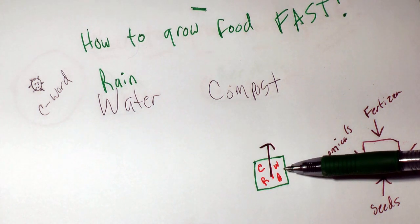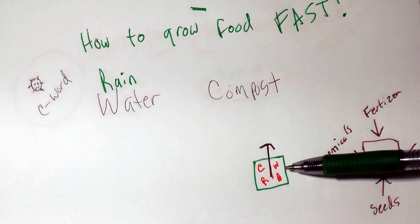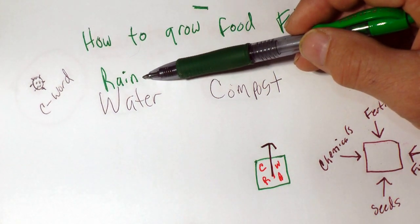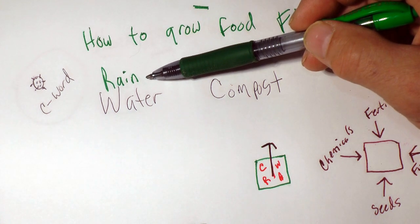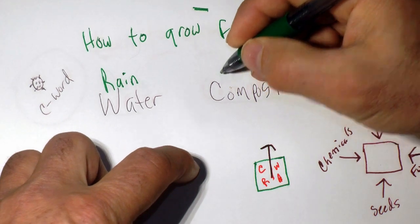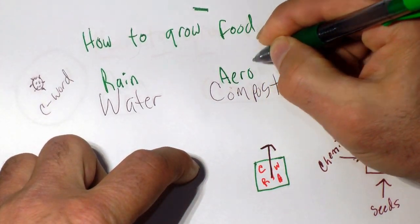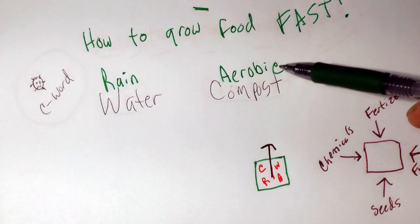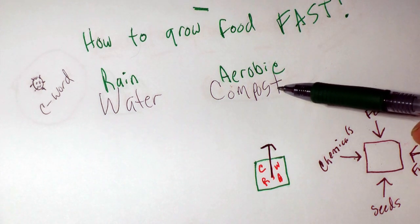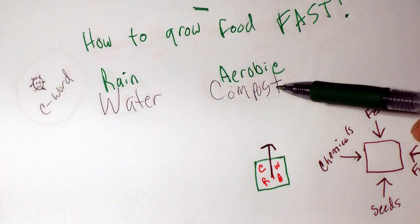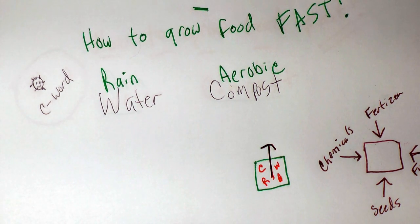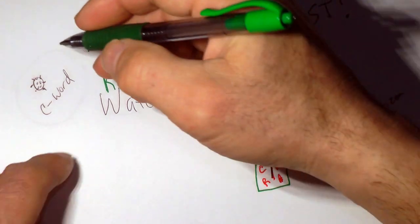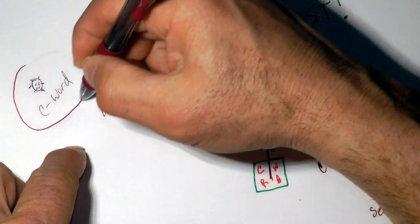Well water requires electricity from off-site — another input we want to reduce to close to nothing. Some people say rainwater is polluted, but so is the air you're breathing. If you're acclimated to the air, the rain is not going to be a problem. For compost, we want to be producing aerobic compost. I have a video series on how to make it, which I'll link in the description. Each video is 20 to 30 minutes, but if you're locked in because of this C word, you may have the time.